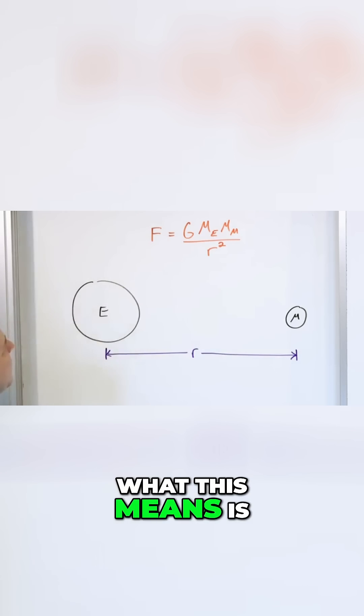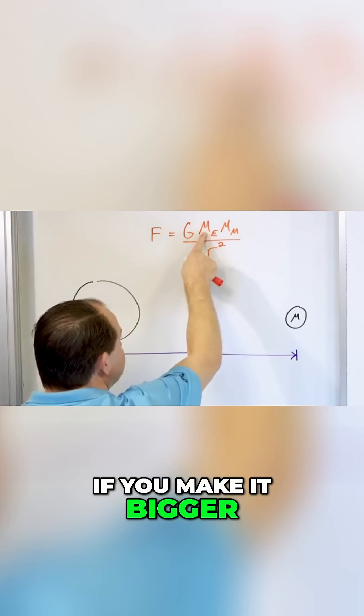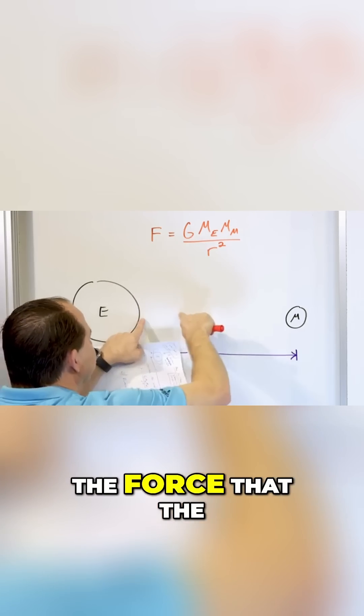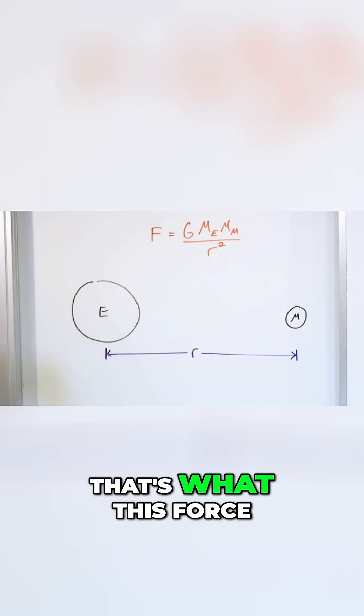What this means is that as you make the two bodies bigger, the mass of the Earth, if you make it bigger, then the force of gravity between the two bodies goes bigger. This force will be the force that the Moon pulls on the Earth and the force that the Earth pulls on the Moon. That's what this force is calculating.